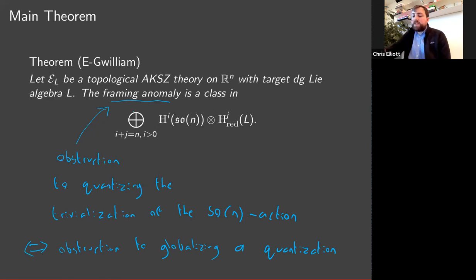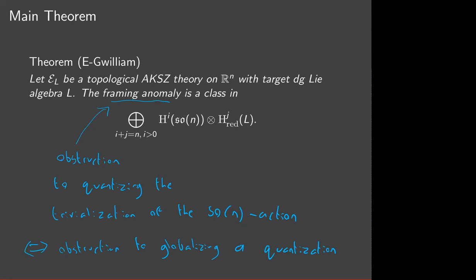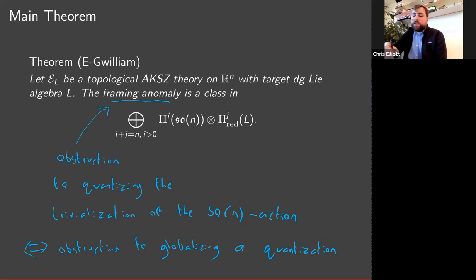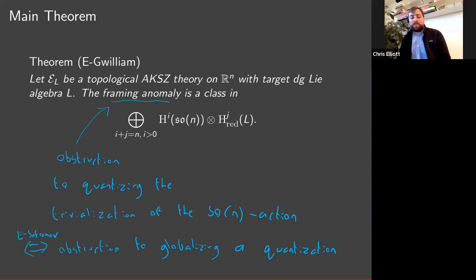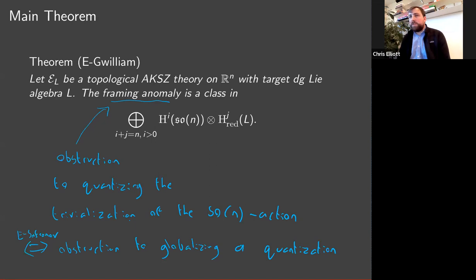The relevant result: it's possible to extend the quantization of the theory on R^n to any oriented n-manifolds precisely when we can lift this ISO(n)-deRham action to the quantum level — i.e., quantize this symmetry. This is a result proved with Pavel Safranov a few years ago, using the language of factorization homology. We construct a certain structure on the algebra of observables that allows us to globalize the quantum observables from R^n to an oriented n-manifold. The question becomes: given a topological AKSZ theory with an isometry action via the Lie derivative, can I quantize this homotopy trivialization? If I can, that gives a procedure extending my quantization on R^n to a general oriented n-manifold.